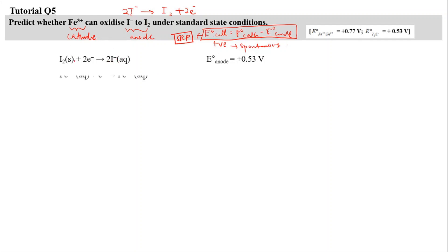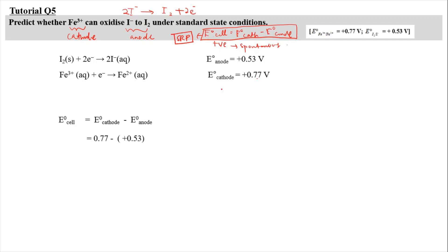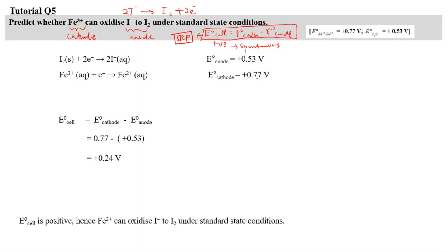At the cathode, Fe³⁺ accepts one mole of electrons to form Fe²⁺(aq), with E° = +0.77 V. E°cell = E°cathode − E°anode = 0.77 − 0.53 = +0.24 V. Since E°cell is positive, Fe³⁺ can oxidize I⁻ to I₂ under standard state conditions.